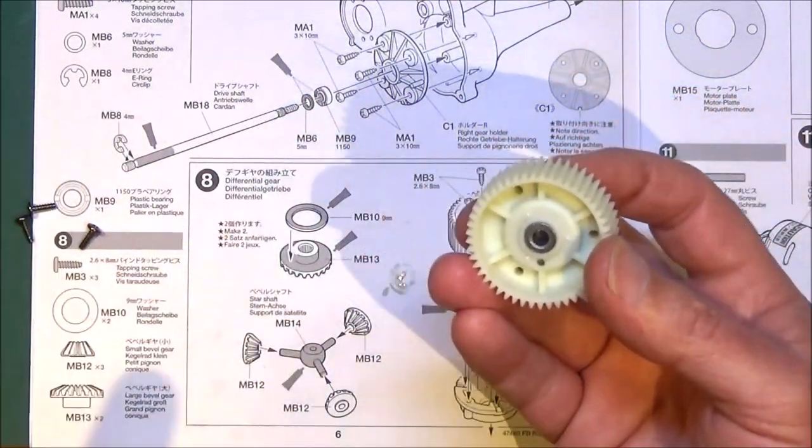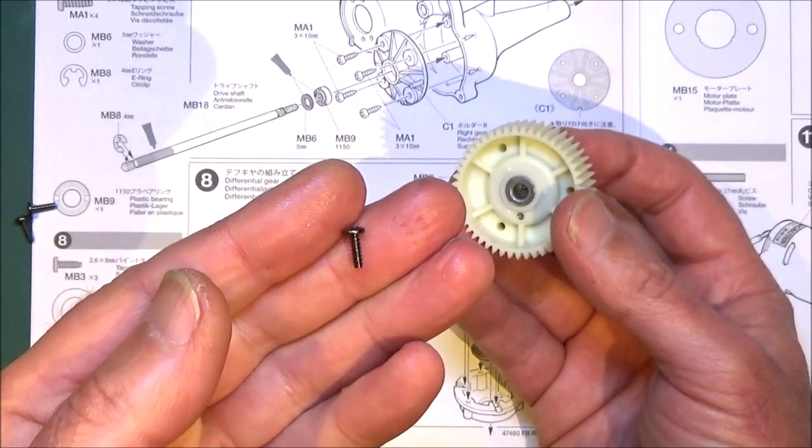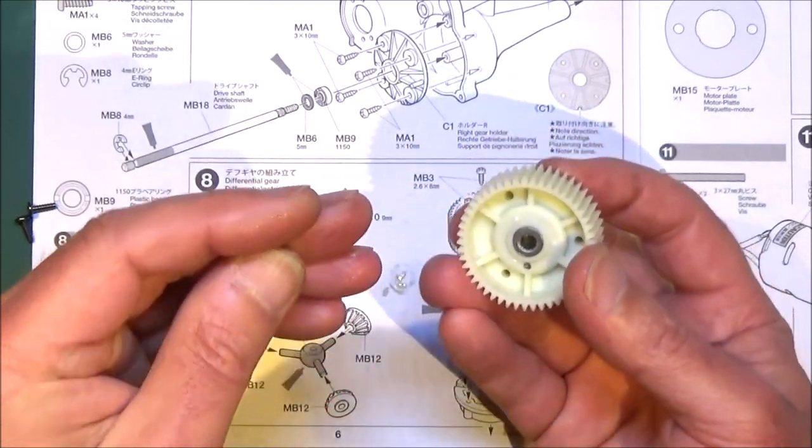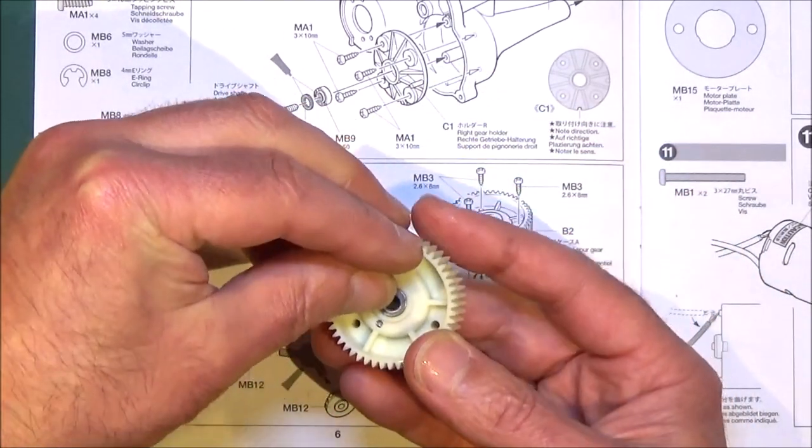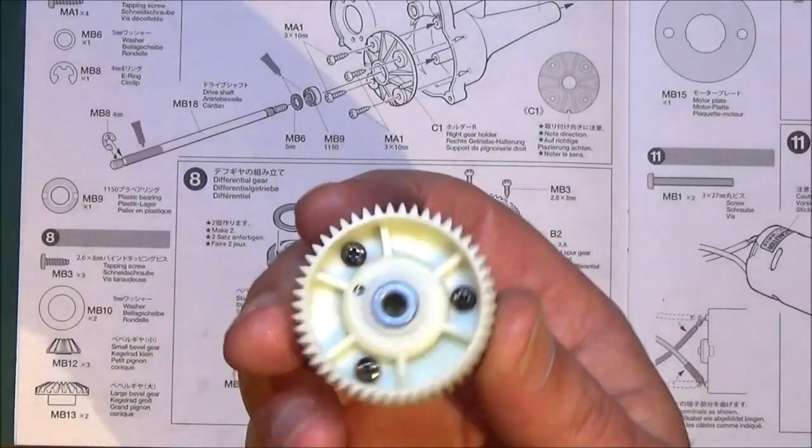Then simply put in these 2x6x8 screws, which are much smaller screws than the other ones we've been using, with a bigger head. There's 3 of those that just hold the case together. When it's finished, it should look like this.